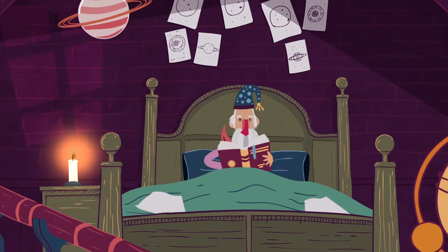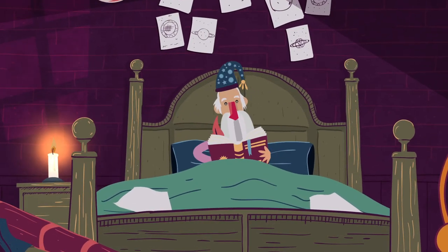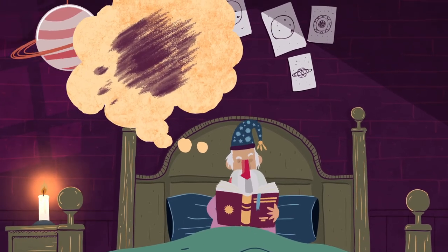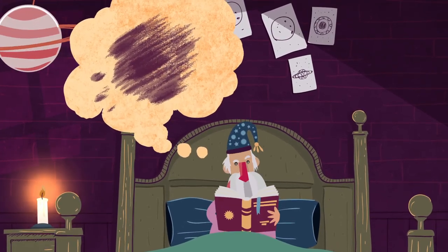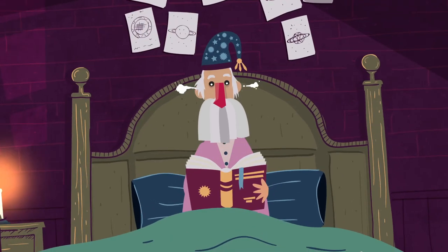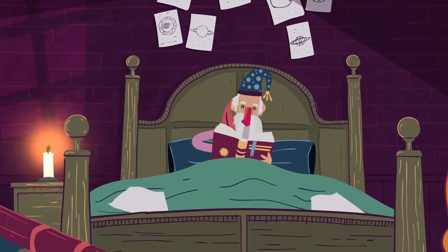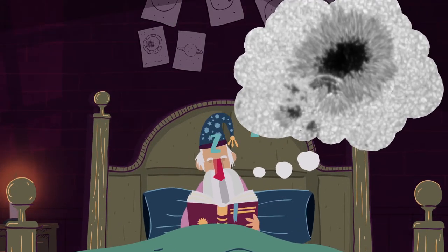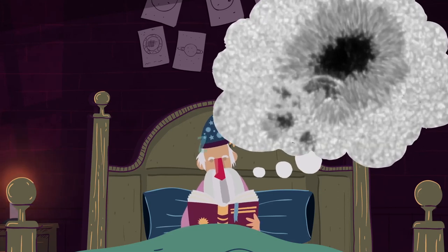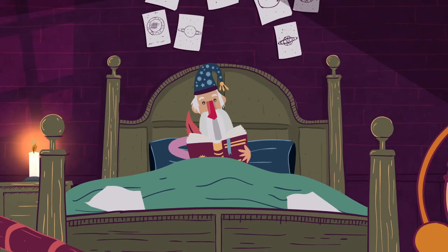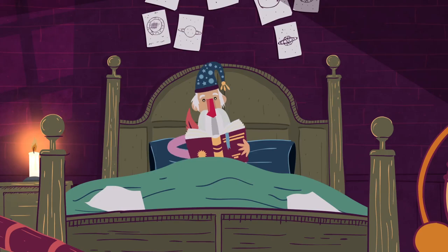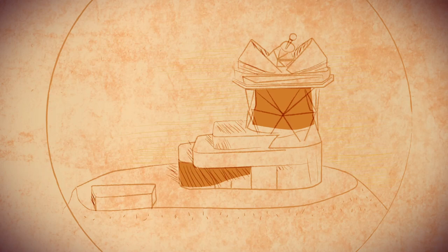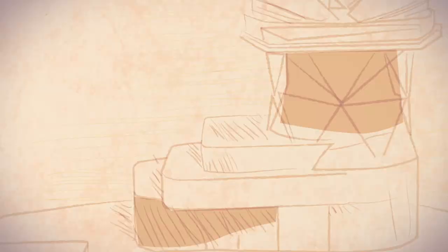Galileo determined that sunspots were part of the sun. However, he could not investigate their features, because he saw them just as blurry blots on a bright background. His telescope was not large enough to resolve sunspots. Galileo dreamed of being able to distinguish the fine structure of sunspots to understand what they are. He would have needed a much larger telescope and advanced instrumentation to do so. Unfortunately, such a telescope was unthinkable in the 17th century.